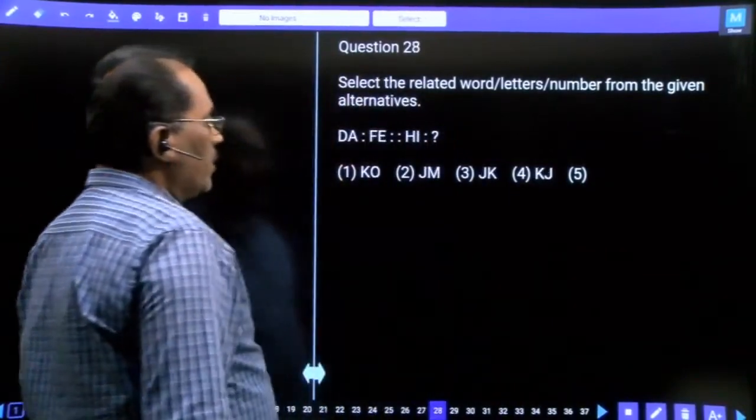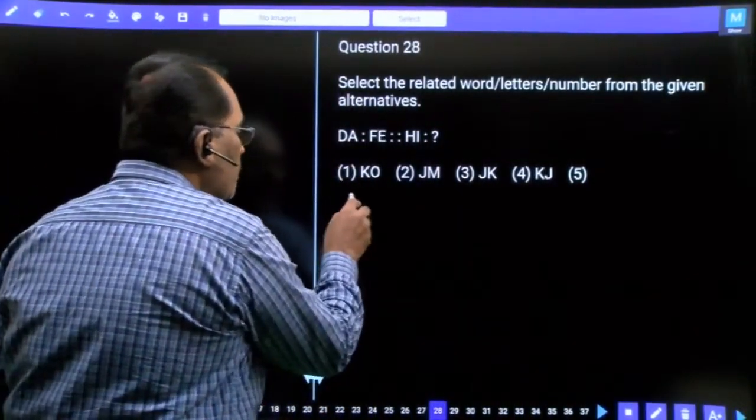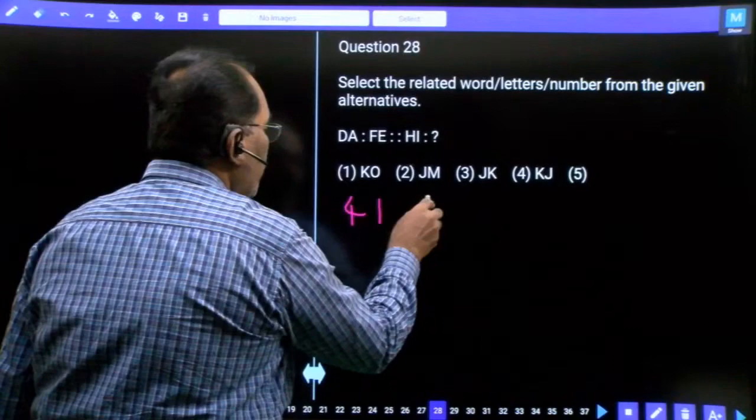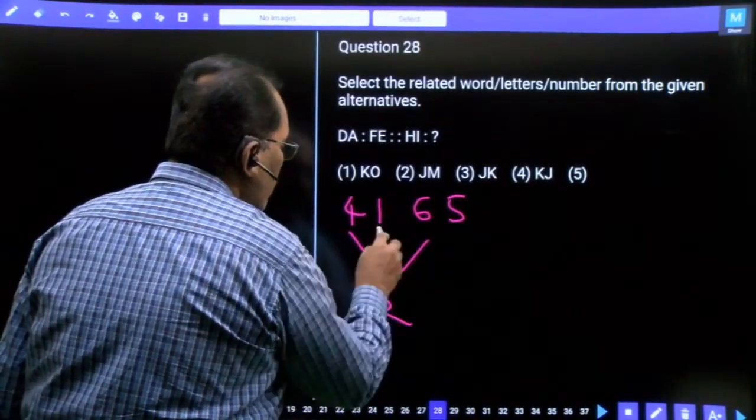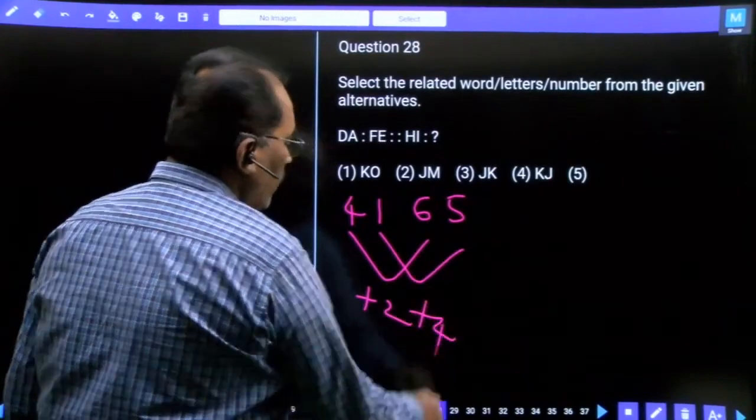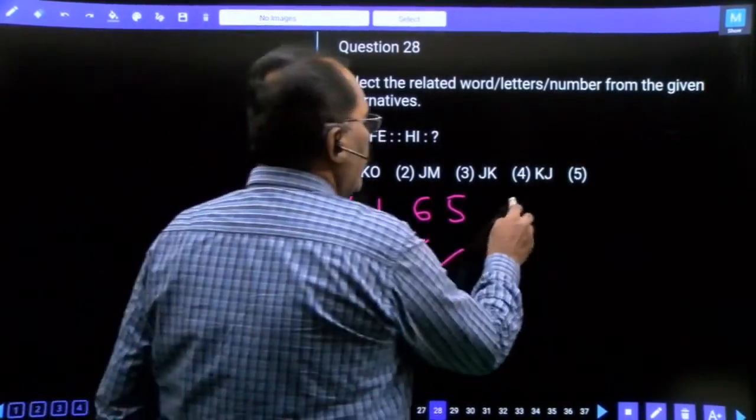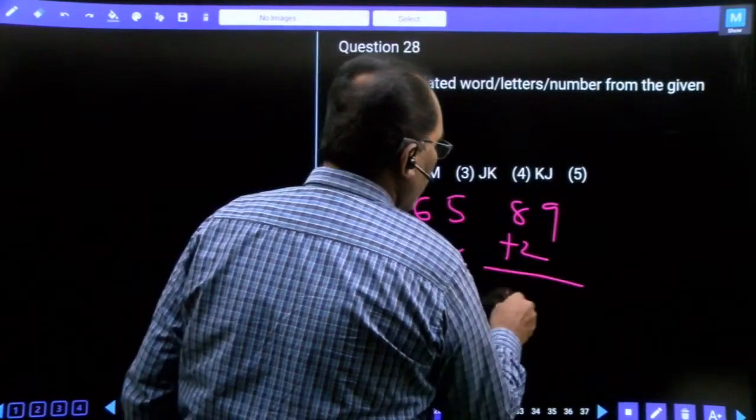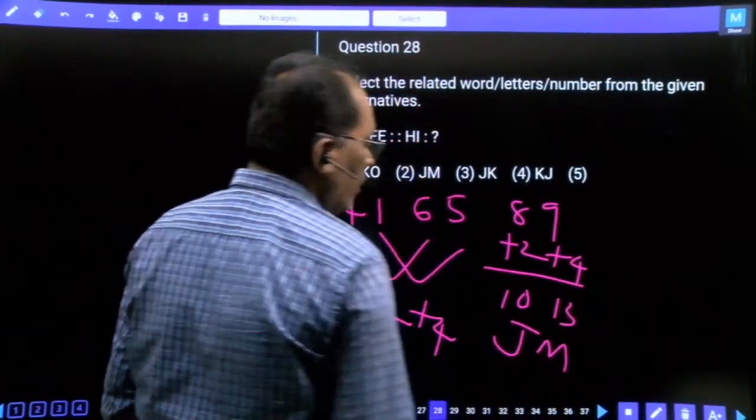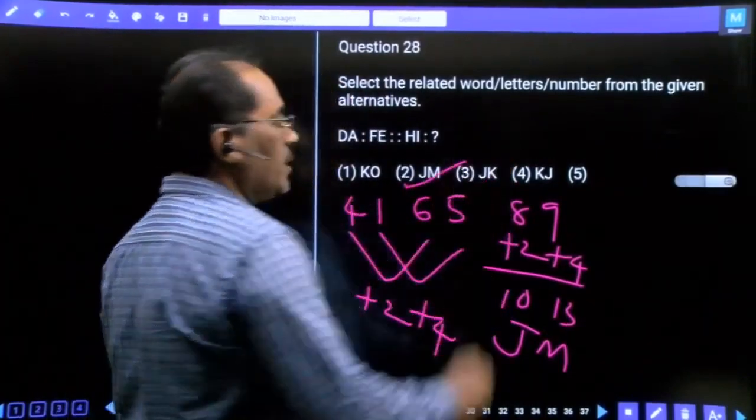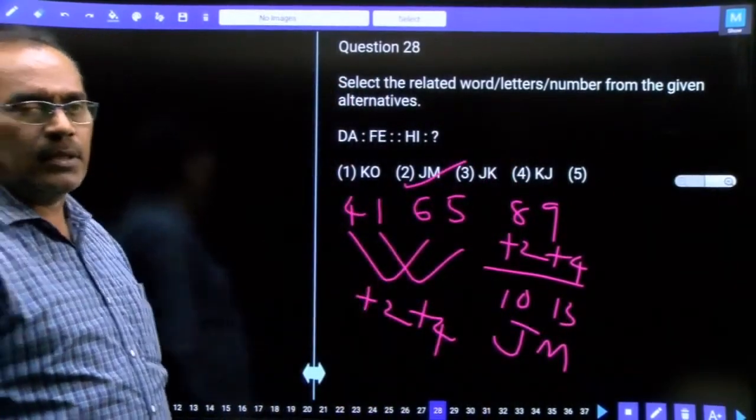Question number 28, this is also letter analogy. D corresponding 4, A corresponding 1. F corresponding 6, E corresponding 5. The relation is plus 2, plus 4. H is 8, I is 9. Plus 2 gives 10, plus 4 gives 13. 10 is J, 13 is M. Our answer is JM, second option.